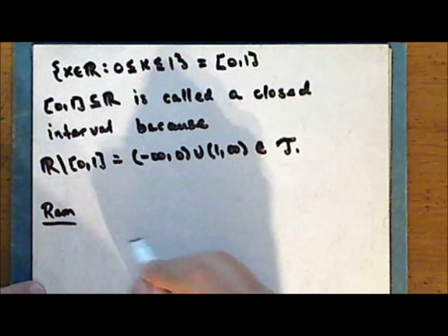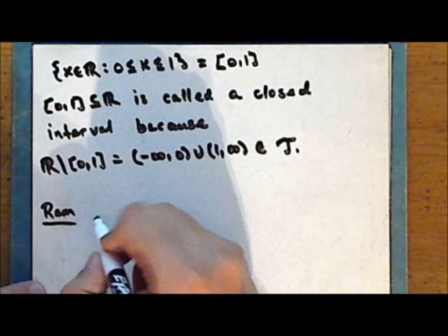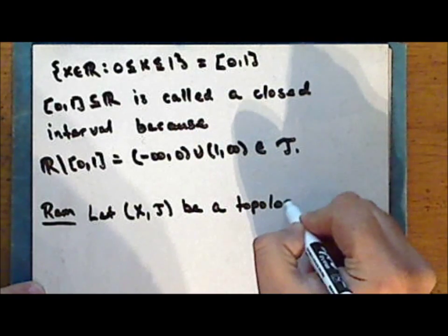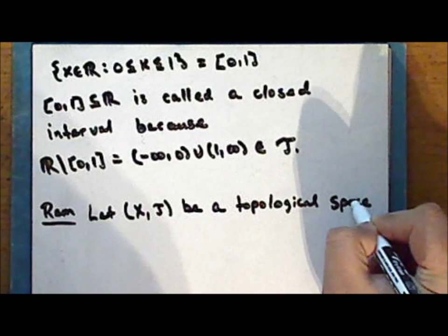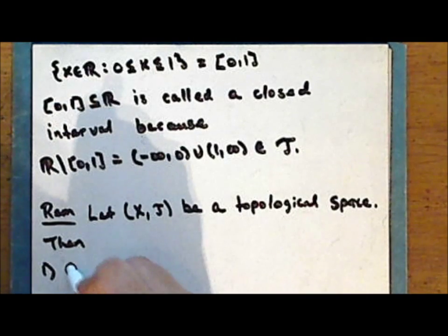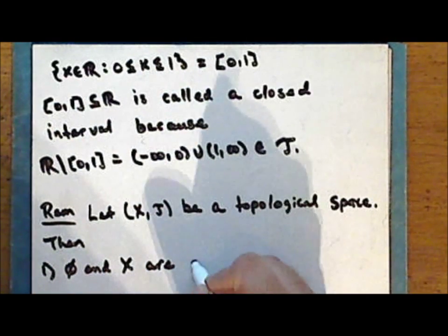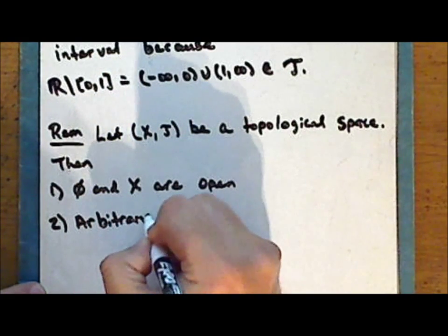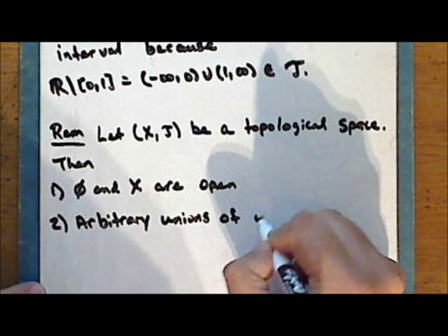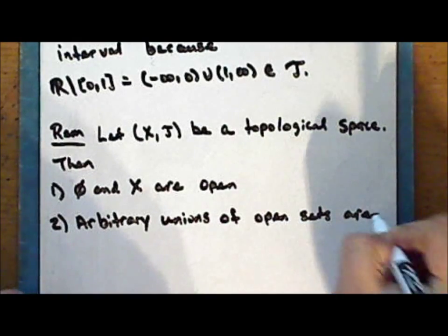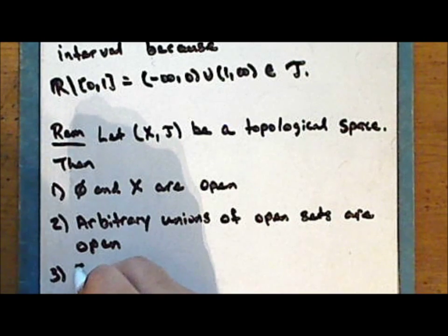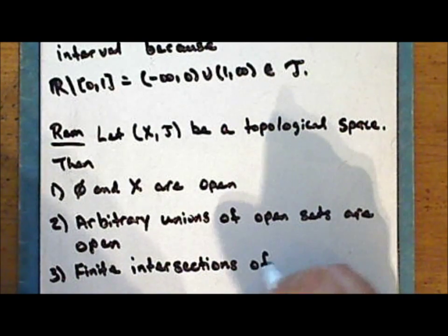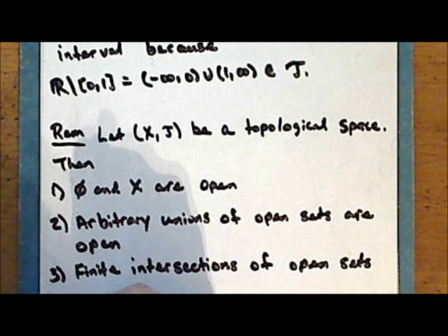We can give a characterization of a topological space in the language of open sets. Let X together with some topology tau be a topological space. Then the empty set and the entire set are open, arbitrary unions of open sets are open, and finite intersections of open sets are open.